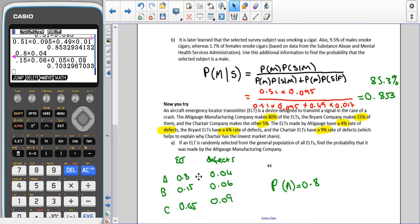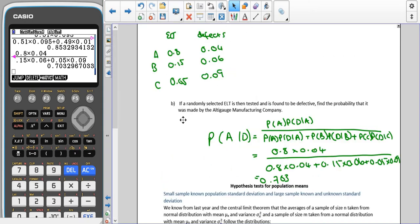Now I'm just going to try and move these over to the next page so you can see what I've done. There we go. So you can see there I've just copied these over from the previous page. So if a randomly selected ELT is tested and found to be defective, what is the probability that it was an AlterGage Manufacturing Company? So this is the probability that it was A, given that it was defective.